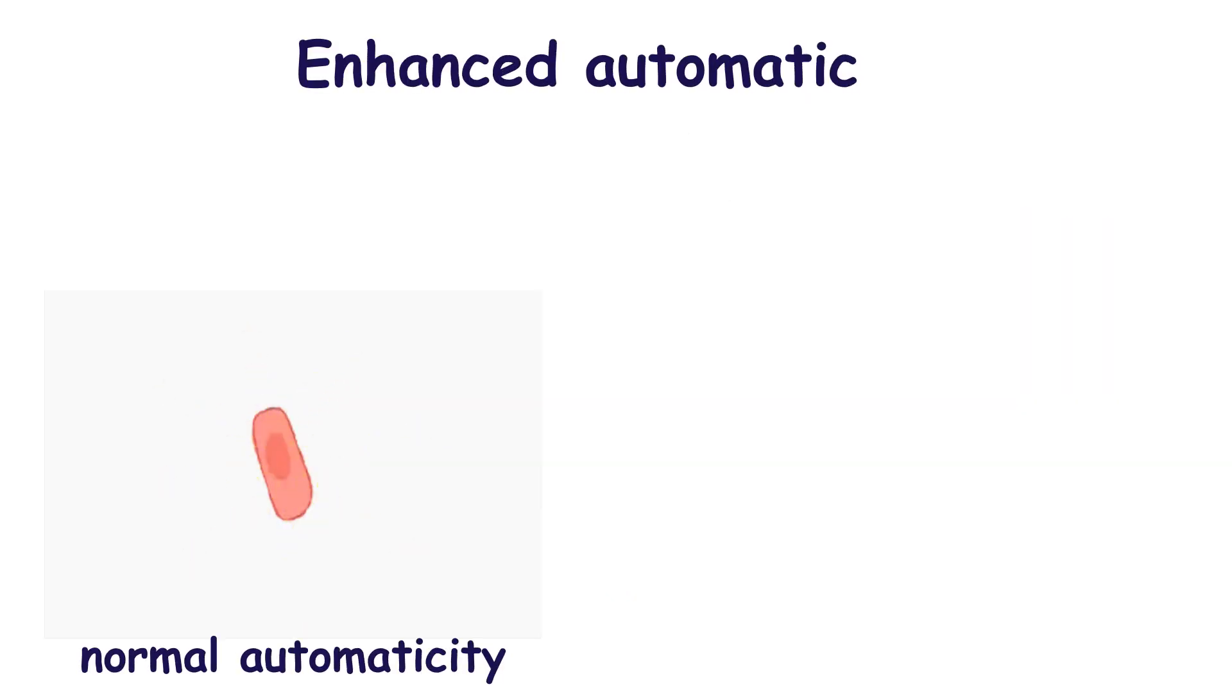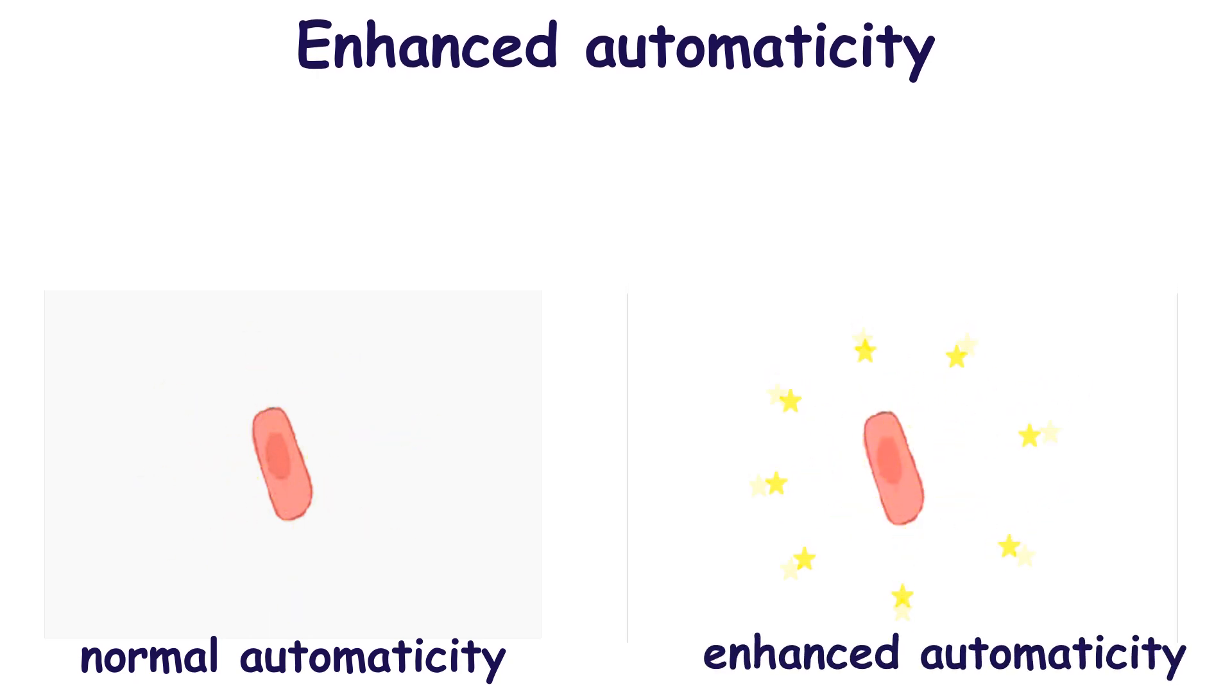Enhanced automaticity is an increase in the rate of impulse discharge. It may be physiological or pathological.